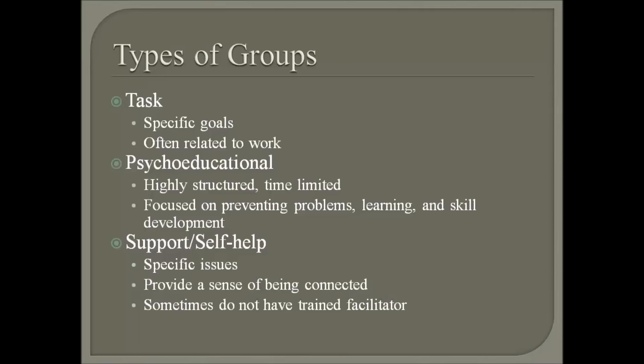The third type is support and self-help groups. I put these together because they're very similar and there's a lot of overlap in the way people define them — the terms are sometimes used interchangeably. Support and self-help groups focus on specific issues, and a popular example of a support group is Alcoholics Anonymous. They provide group members a sense of being connected to one another and sometimes they do not have a trained facilitator. This would be a group where it would be unusual for a mental health counselor to be a facilitator.